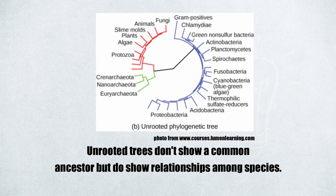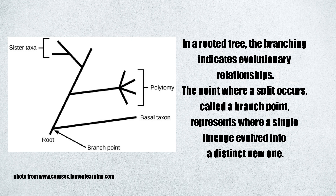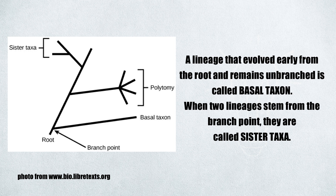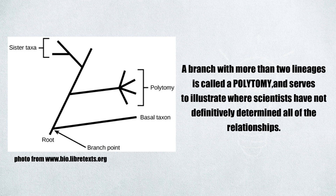Unrooted trees don't show a common ancestor, but do show relationships among species. In a rooted tree, the branching indicates evolutionary relationships. The point where a split occurs, called a branch point, represents where a single lineage evolved into a distinct new one. A lineage that evolved early from the root and remains unbranched is called a basal taxon. When two lineages stem from the same branch point, they are called sister taxa. A branch with more than two lineages is called a polytomy, and serves to illustrate where scientists have not definitively determined all of the relationships.